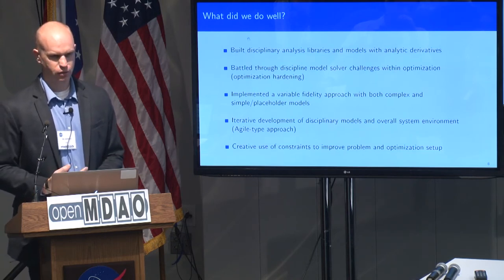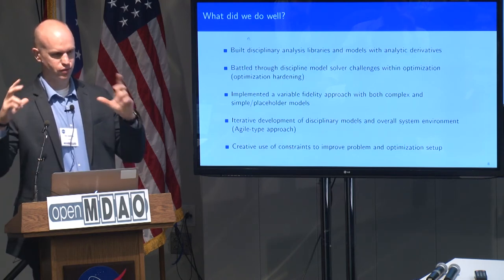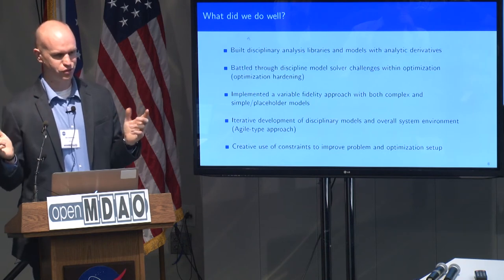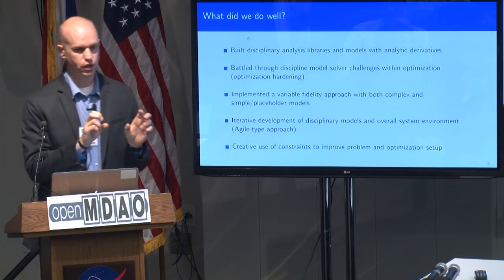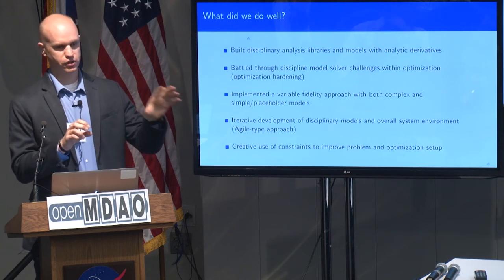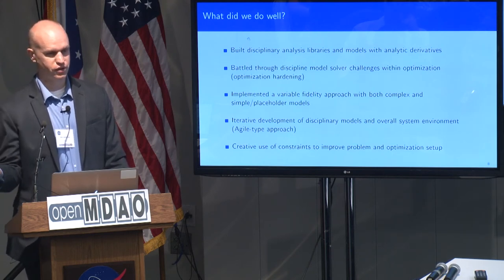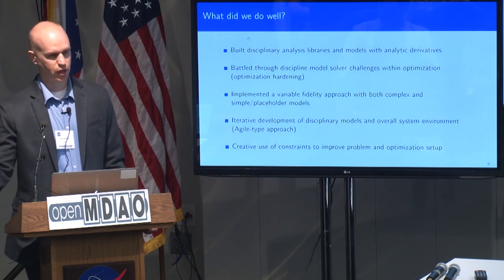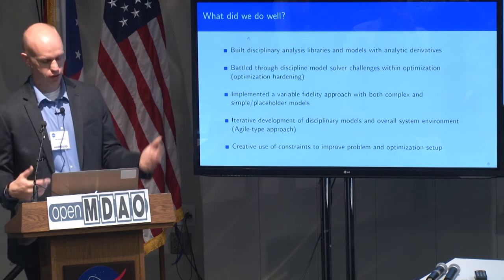One of the other things we did that was very useful for our team was implementing a variable fidelity approach. We had our full complex physics-based model for each of the different disciplines, and we also built a simplified surrogate model approach that was separate from that. Then we could substitute those in and out for each other so that we could do development of the entire framework, or we could test out one complex discipline at a time without having to spend the computational cost of going through all of them. For example, for the propeller we could put in constant propeller efficiency — same outputs from that discipline but much faster to execute.